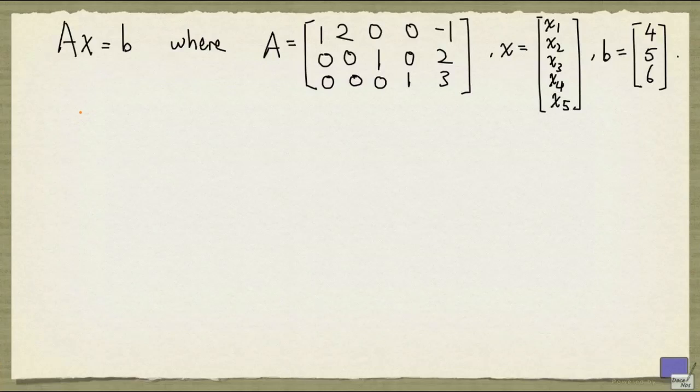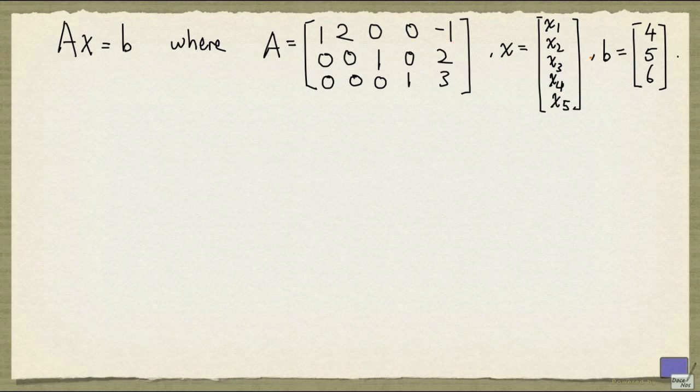Consider the system of linear equations given by Ax equal to b, where A is this matrix given here, and b is this tuple: 4, 5, 6. Notice that A is already in reduced row echelon form and it has no row of zeros. So the system has at least one solution.